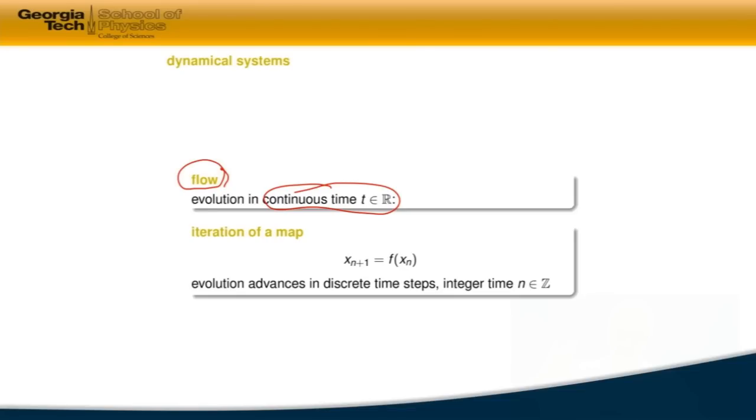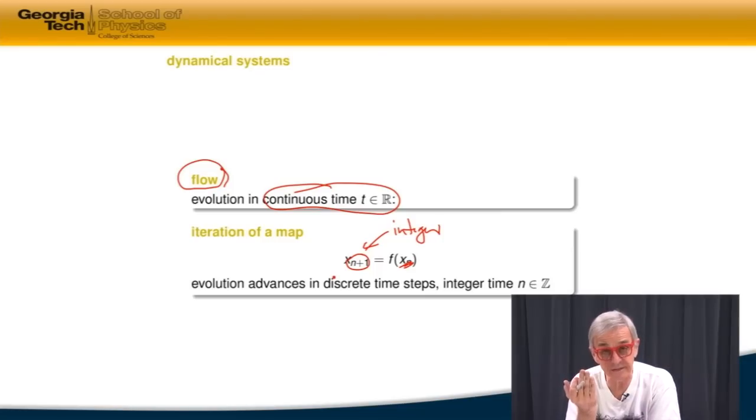Or you can imagine a different situation. You are in a discotheque. And there is a strobe. And as you dance, you get frozen images at every strobe. So the time now becomes integer. And then your law of motion is a map that says, if I was in this position at time t, or n, I'm at time n plus 1. So the time can be considered either discrete or continuous, as you'll see very soon. We can go back and forth between the two.